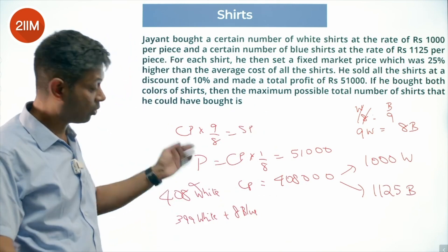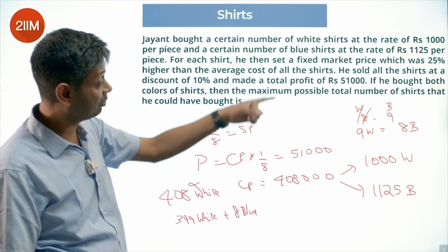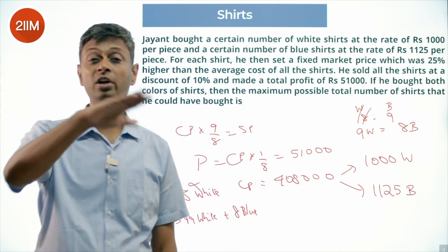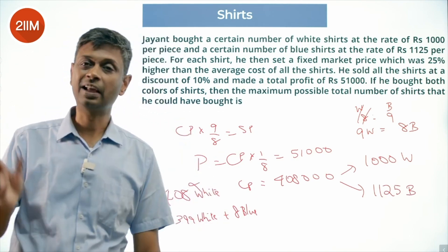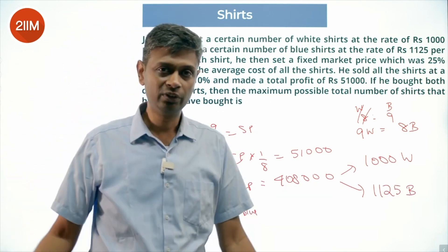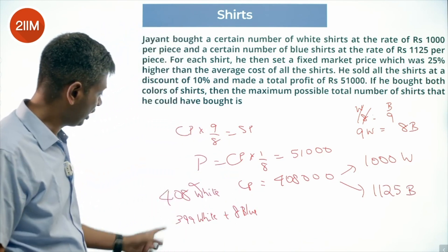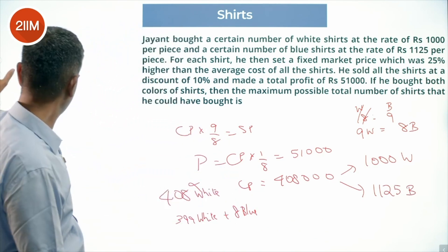This will be the best combination because he's buying both colors. We cannot do 408 white and 0 blue; we can do 399 white and 8 blue. The answer is 399 plus 8 equals 407 shirts.